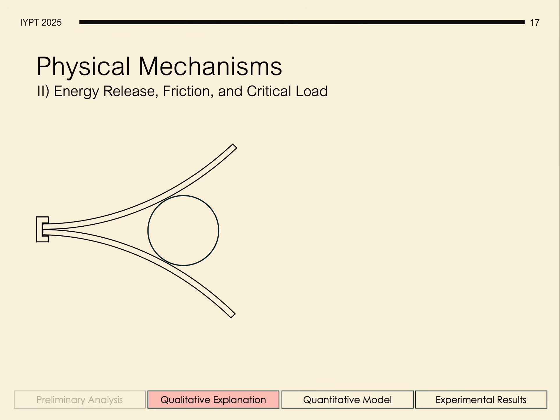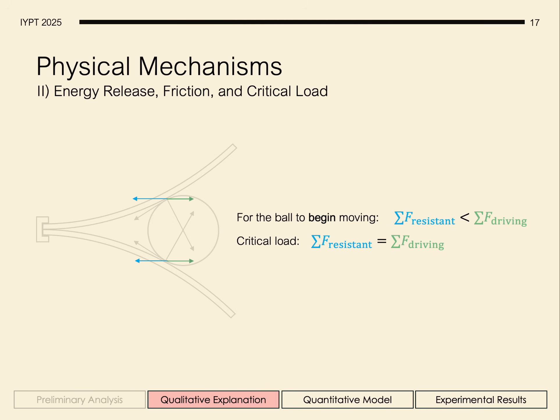Considering the main forces acting on the ball, namely the normal driving forces and the friction forces perpendicular to them. We can look at the effective horizontal components of each, and notice that the condition for the ball to begin moving is such that the sum of the driving forces must be greater than the sum of the resistant forces. And we can note that the critical load ends when the sum of driving forces equals the sum of resistant forces.